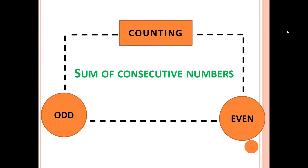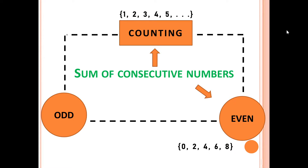When we say sum of consecutive counting numbers, it should start from 1, 2, 3 to positive infinity. When we talk about the sum of consecutive even numbers, these are the numbers that end with 0, 2, 4, 6, or 8.